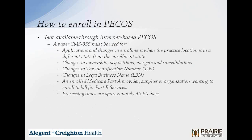Some items are not available through internet-based PECOS and will require filing a CMS-855 paper form: a change in enrollment when the practice location is in a different state from the enrollment state, changes in ownership, acquisitions, mergers, and consolidations, changes in tax identification number or legal business name, or if an enrolled Medicare Part A provider, supplier, or organization wants to enroll to bill for Part B services. The processing time for paper is about 45 to 60 days.